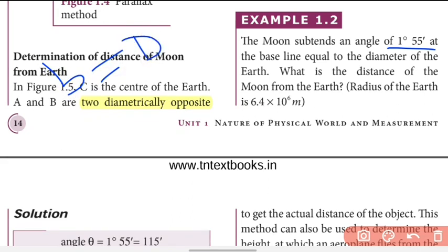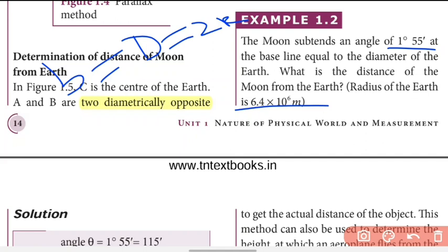To find the diameter of the Earth, we use the radius of the Earth. Diameter is equal to 2 times the radius. So that means 2 into 6.4 into 10 to the power of 6 meters equals the diameter of the Earth. So the baseline is that length, and we can use the formula for the parallax method.